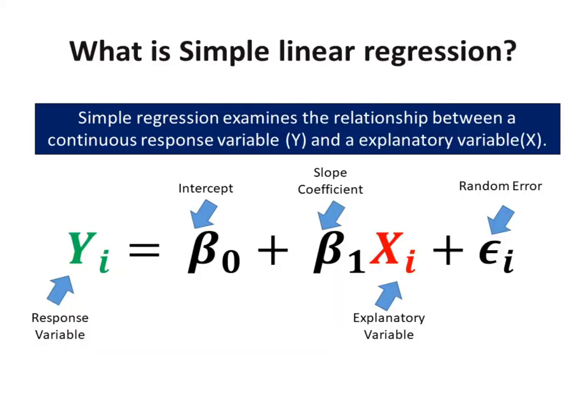What is simple linear regression? Simple regression examines the relationship between a continuous response variable Y and an explanatory variable X. The general equation for a simple regression model is below. Y is response variable. Beta sub 0 is intercept. Beta sub 1 is slope. X is explanatory variable. Epsilon is random error.